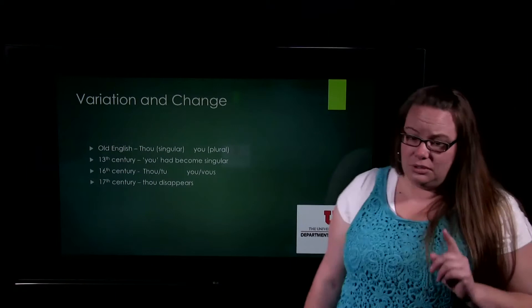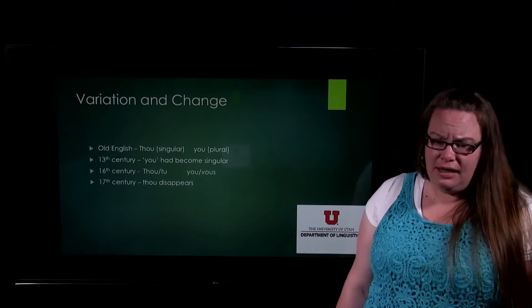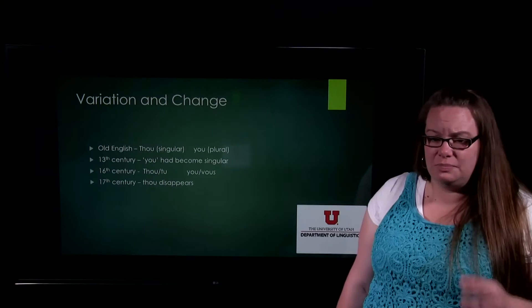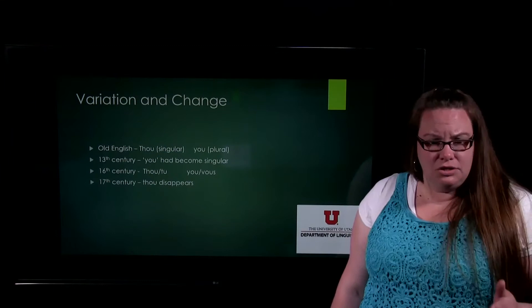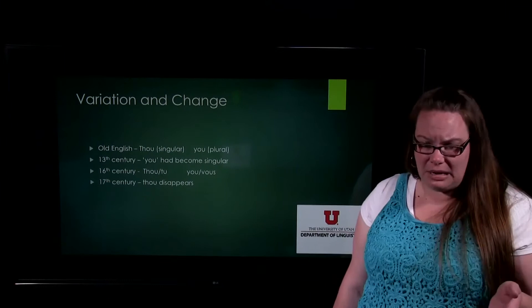So now there's an alternation between 'thou,' which is singular and has been for a long time, and 'you,' which can now be used as singular or plural. It probably starts out only sometimes as singular. By the 16th century, the separation between those two words becomes very distinct — what's called a tu-vous distinction. Tu-vous comes from French and represents 'you informal,' like talking to your best friend or a child, versus 'you formal,' like talking to your boss or parents.